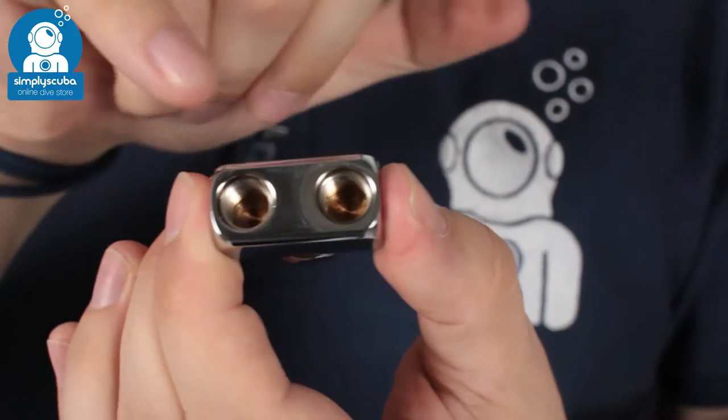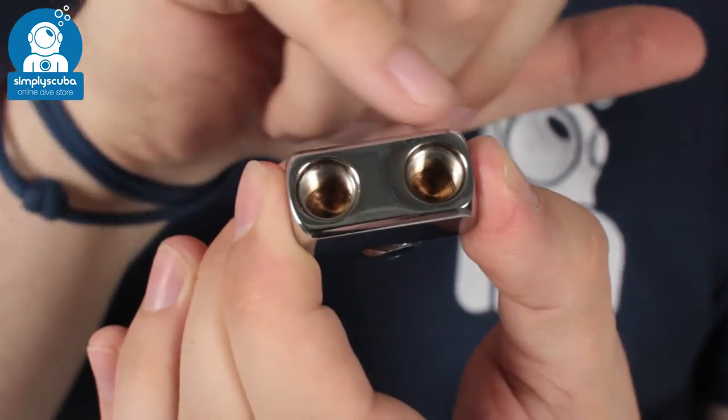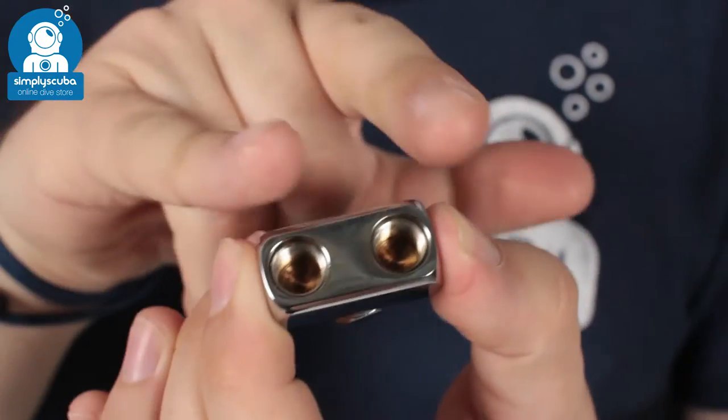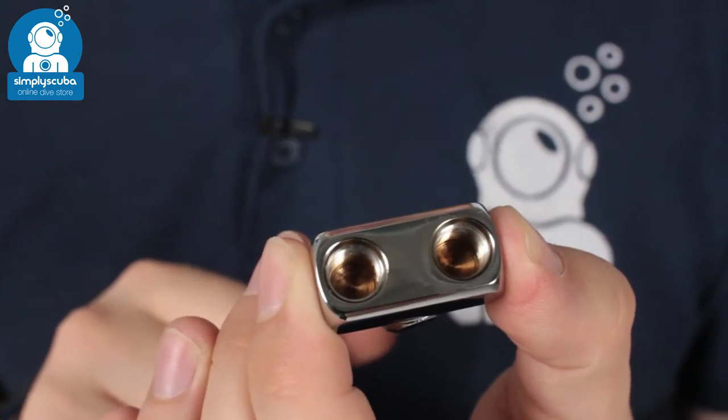On the other end, you have two low-pressure ports. These are 3/8 UNF threads, so you can have two low-pressure hoses coming out of that.